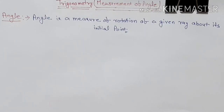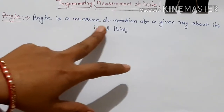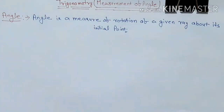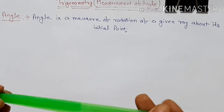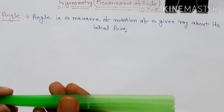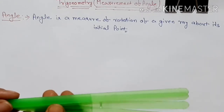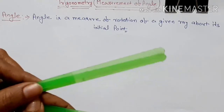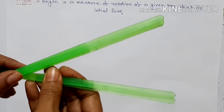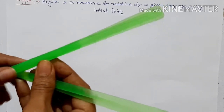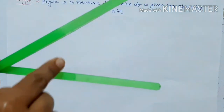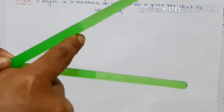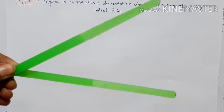First we will know what is the definition of angle. Angle is the measure of rotation of a given ray about its initial point. Suppose it is a ray — the rotation about its initial point. We measure the gap of this rotation, and that gap is what we call the angle.